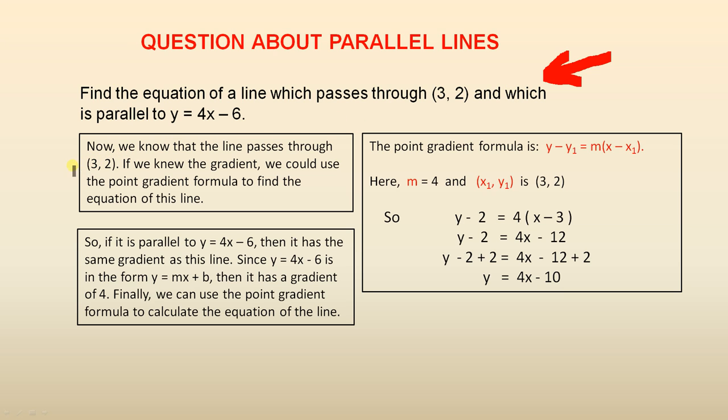Now, we know that the line passes through (3, 2). That's a given. So that's part of the puzzle there. Very important information. If we knew the gradient, we could use the point gradient formula. That's the formula we can use to find the equation of this line. So we need the gradient.